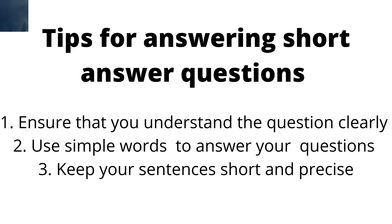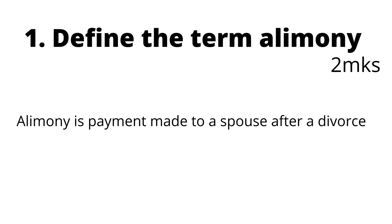Now let us get straight into the paper. The first question: define the term alimony. This is a pretty simple and straightforward question that requires a very simple and straightforward answer. The answer: alimony is payment made to a spouse after a divorce. Full stop, and you move on. That question values two marks and that answer should give you your two marks.